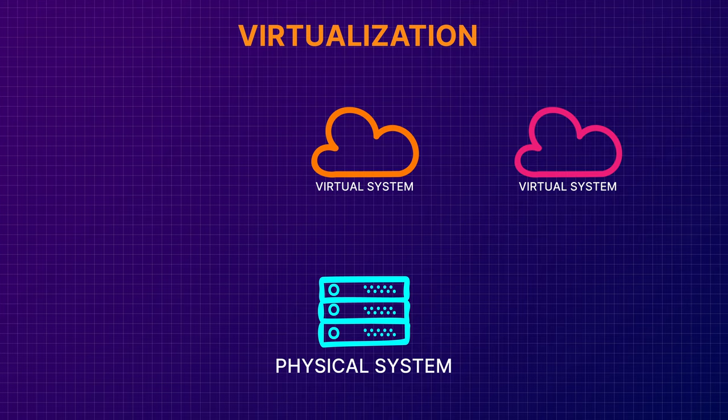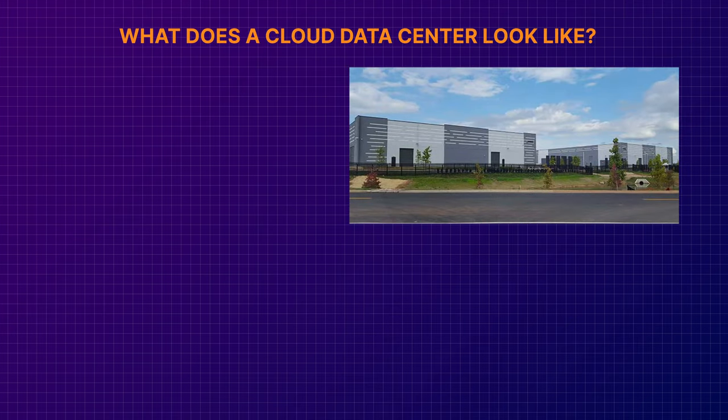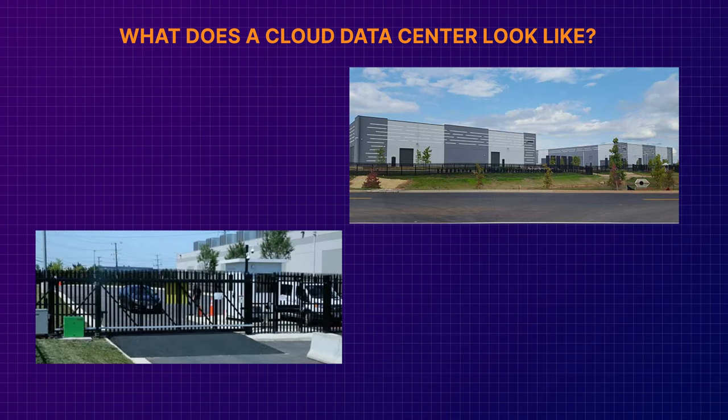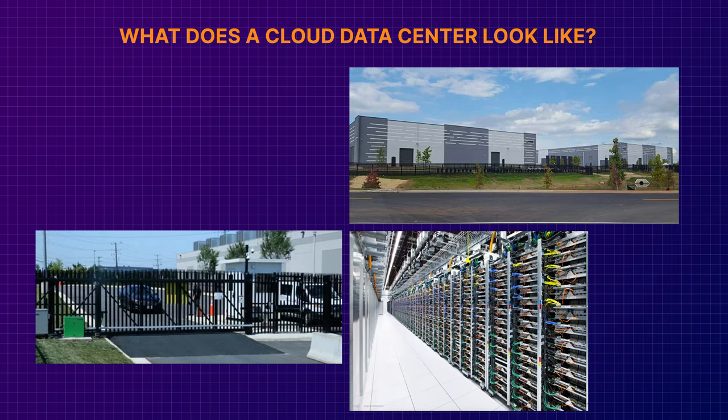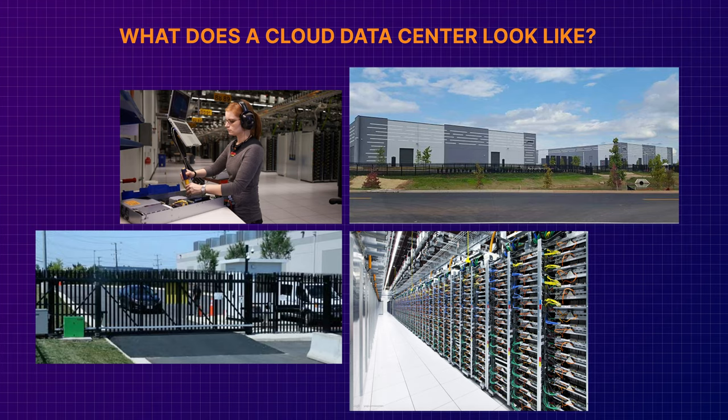When you're done, the virtual system just disappears and the physical system resources can be reallocated to other customers. Cloud provider data centers look like big warehouses — usually heavily secured with lots of extra power and cooling equipment. Inside there are rows and rows of racks holding physical computers, which host several virtual systems rented out to customers as needed. These data centers usually only have a very small handful of people working there, as most maintenance is automated. And data centers are really loud — they have lots of cooling equipment running at full blast trying to keep everything from overheating.